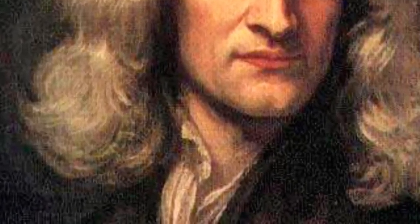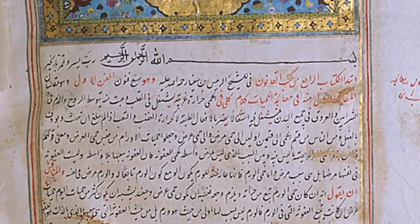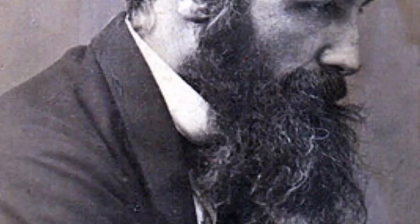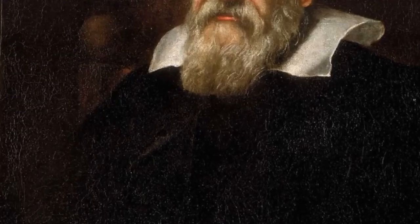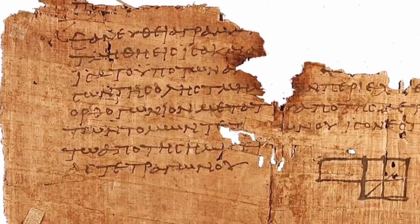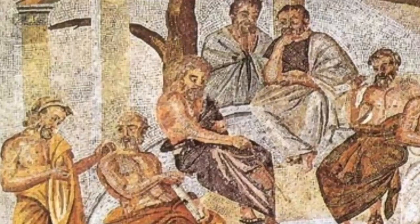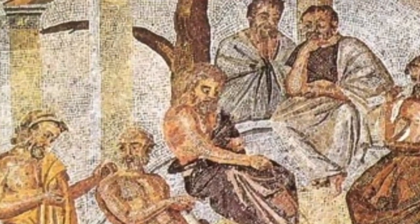The curriculum of monastic schools included the study of the few available ancient texts and of new works on practical subjects like medicine and timekeeping. In the 6th century in the Byzantine Empire, Isidore of Miletus compiled Archimedes' mathematical works in the Archimedes palimpsest, where all Archimedes' mathematical contributions were collected and studied.